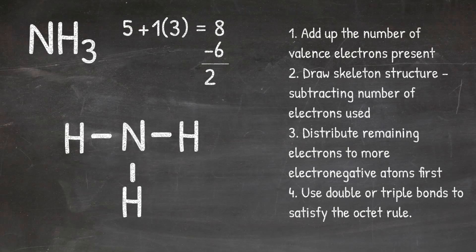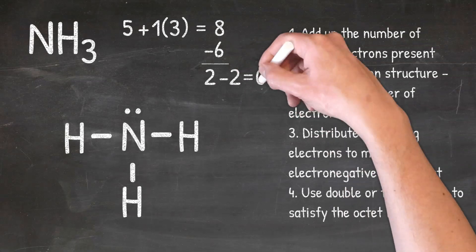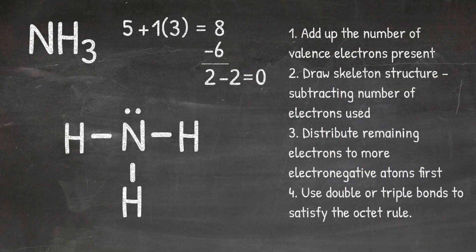That leads me to step three: distribute the remaining electrons. The rule tells us to distribute them to the more electronegative atom first. The periodic trend for electronegativity tells us nitrogen has a higher electronegativity than hydrogen, so I add the two electrons to nitrogen as a lone pair. I subtract those two electrons and end up with zero electrons left. Moving on to step four, I check if double or triple bonds are needed. Each hydrogen has a single bond giving it two electrons, so it's satisfied. Nitrogen has three single bonds plus a lone pair, giving a total of eight electrons around it — also satisfied. I do not need any double or triple bonds. This is the structure for NH3.